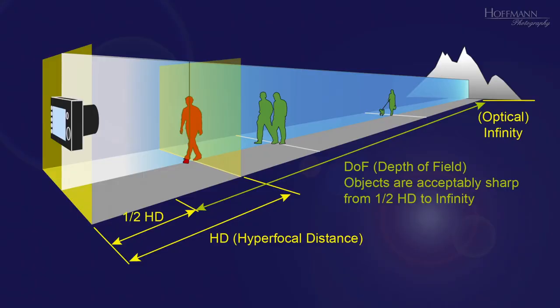If that sounds a bit confusing, here is an illustration that should make things clear. If you focus on the hyperfocal distance — let's say that is the distance from the camera to the red person — then the image is acceptably sharp from half the hyperfocal distance out to infinity, shown here as the green arrow. And that is, of course, the depth of field.